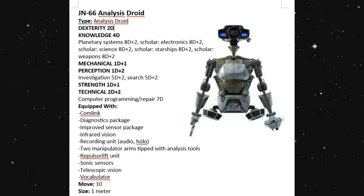It has a mechanical of 1D plus 1, so it's below our galactic standard. Perception is slightly below galactic standard by being a 1D plus 2, although it does have investigation at 5D plus 2 and search at 5D plus 2. So again, to help it try and look at things, try and discern what is what, why things were done in a certain way.